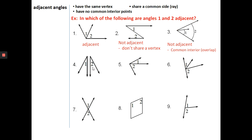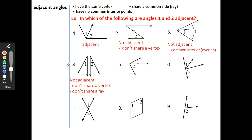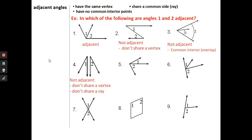Number four: not adjacent, for two reasons. They don't share the same vertex, and there are four rays, meaning they don't share a ray. Having four rays instead of three is a giveaway. But as number three showed, having three rays doesn't always mean they're adjacent — they can still overlap.